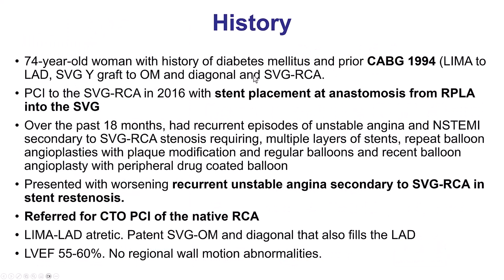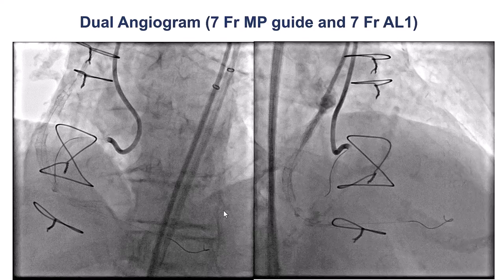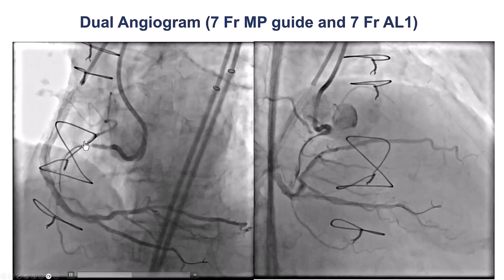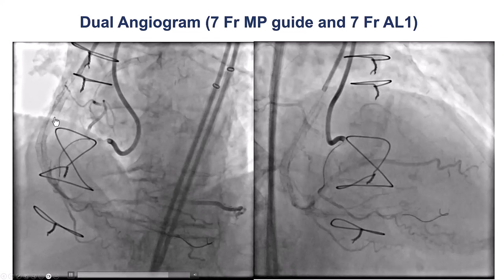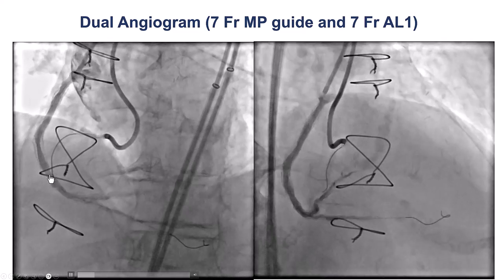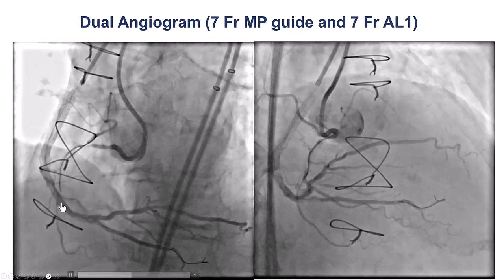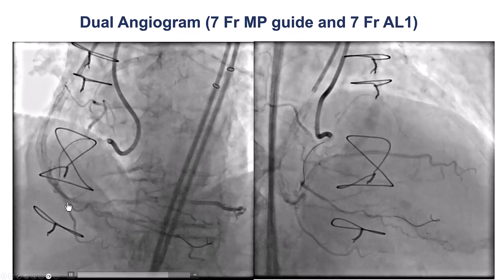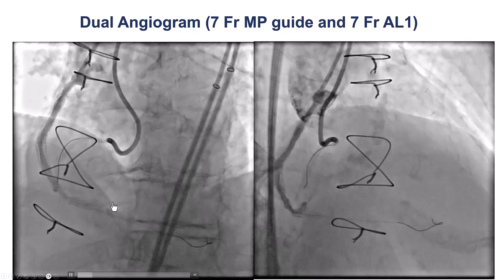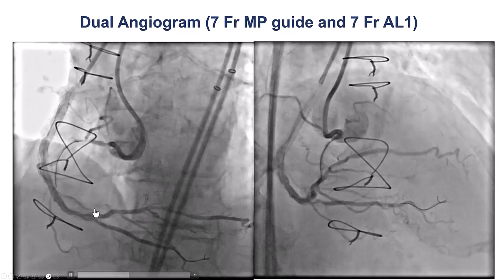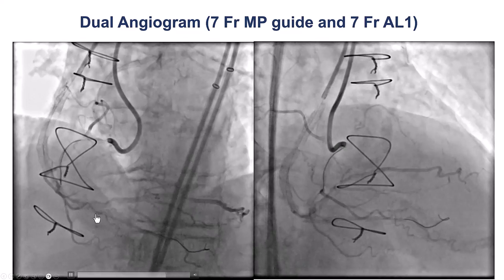The patient was a gentleman who had previous coronary bypass graft surgery, and then he had failure of the saphenous vein graft to the right coronary artery — multiple episodes of failure — and he was sent for recanalizing the native right coronary artery CTO. This is the diagnostic angiogram showing the failing bypass graft with multiple stents. Unfortunately, there is actually a stent going from the bypass graft into the native coronary artery, and this was the source of a lot of challenges as we will show during the case.